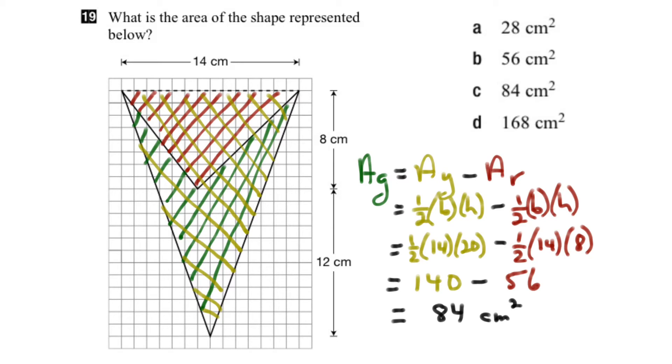So let's look at the list of options here, and we can see that the answer will be C, 84 cm squared for the area of this shape here.